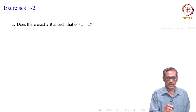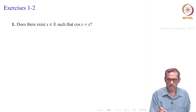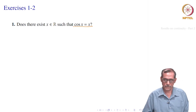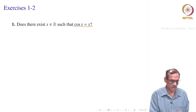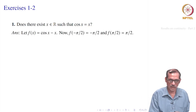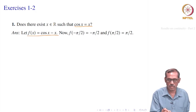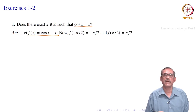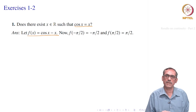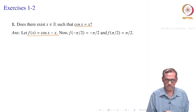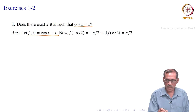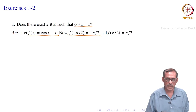Here is a problem. Does there exist a real number such that cos(x) = x? You can see this from a graph of cos(x) and the line y = x, but let us do it analytically. We define f(x) = cos(x) − x. We want to see whether there is a point where f equals 0. To apply the Intermediate Value Theorem, we need to find where this function takes a negative value and where it takes a positive value — there will be some guesswork. Let us take f(−π/2): at −π/2, cos(x) becomes 0 and −x becomes +π/2.